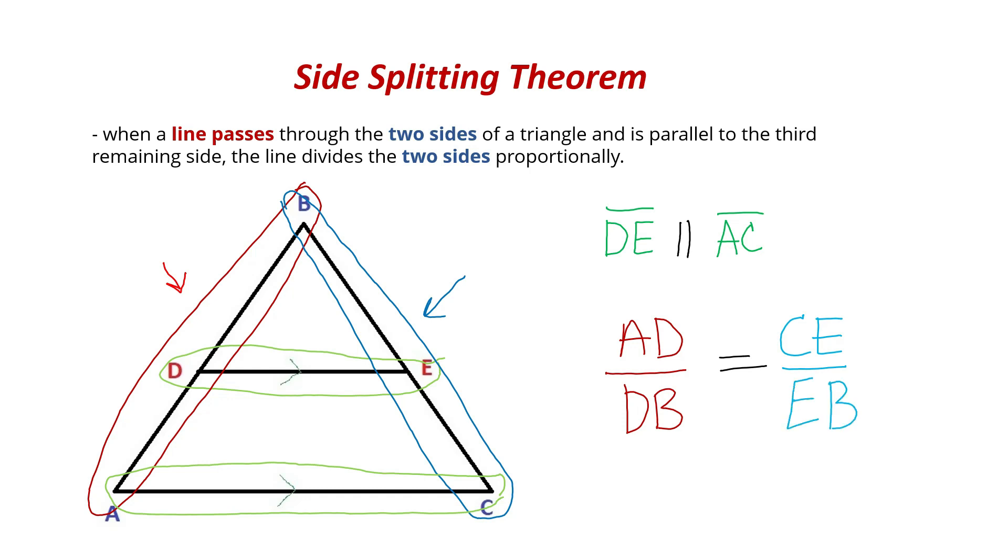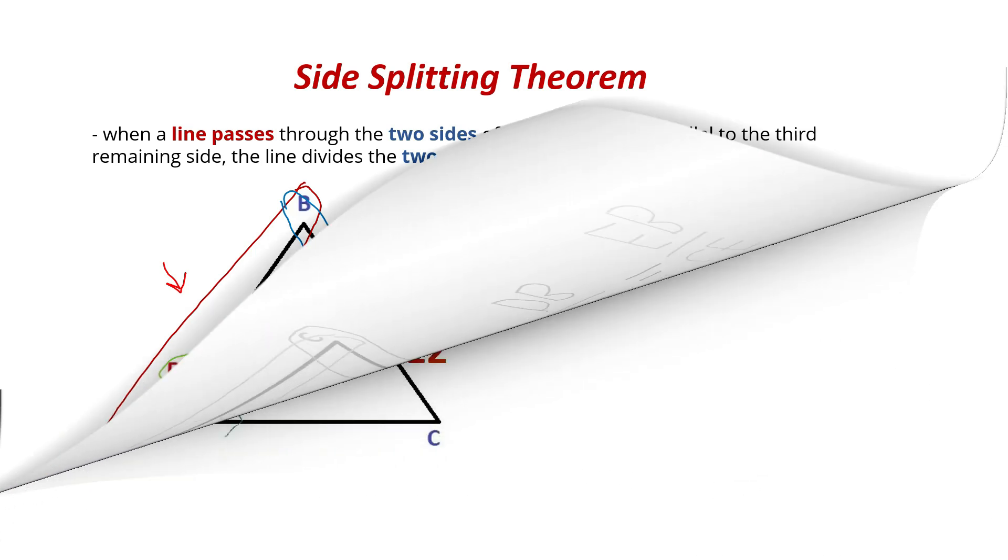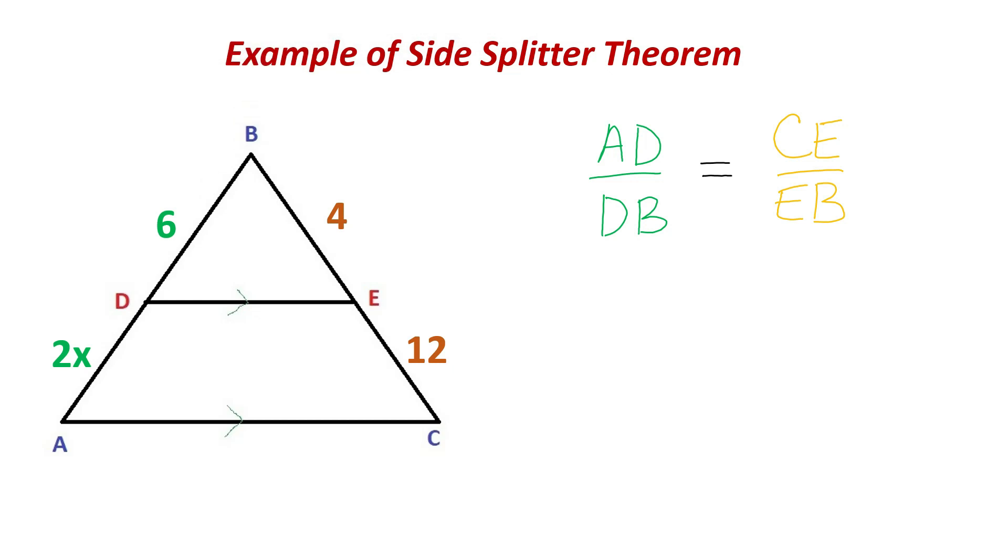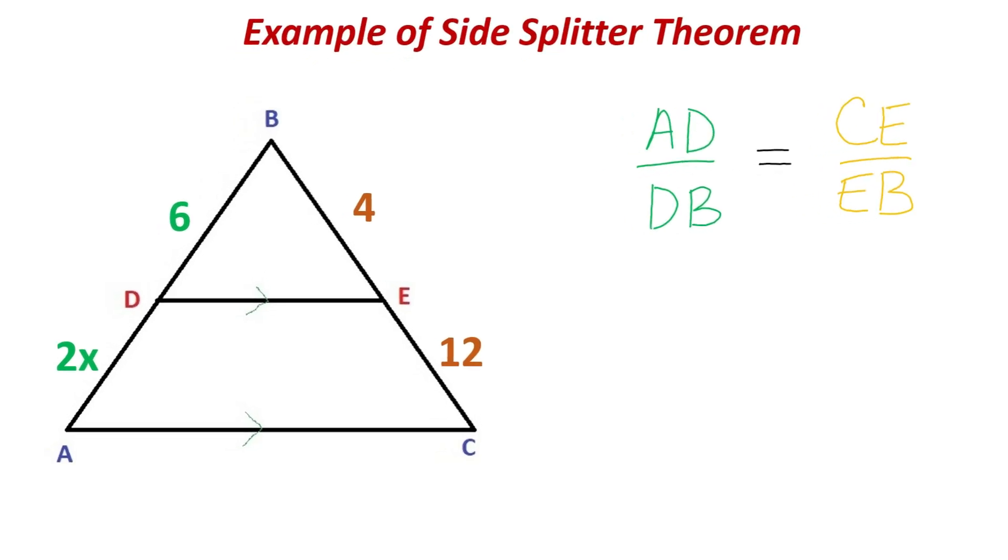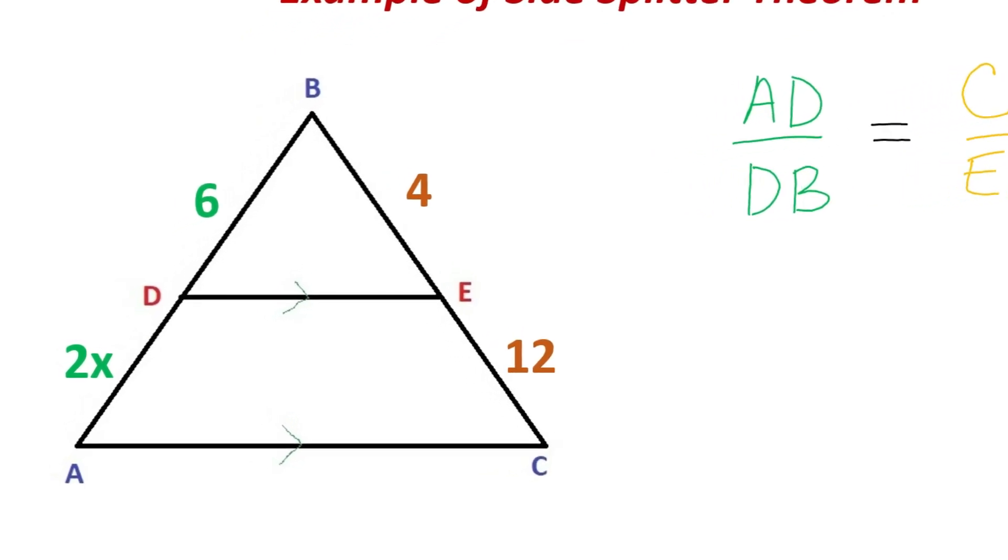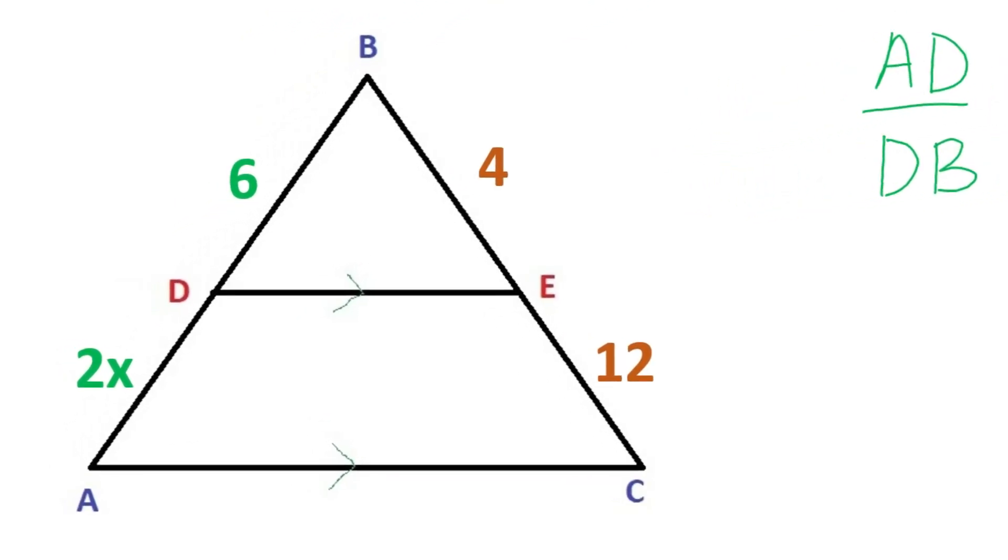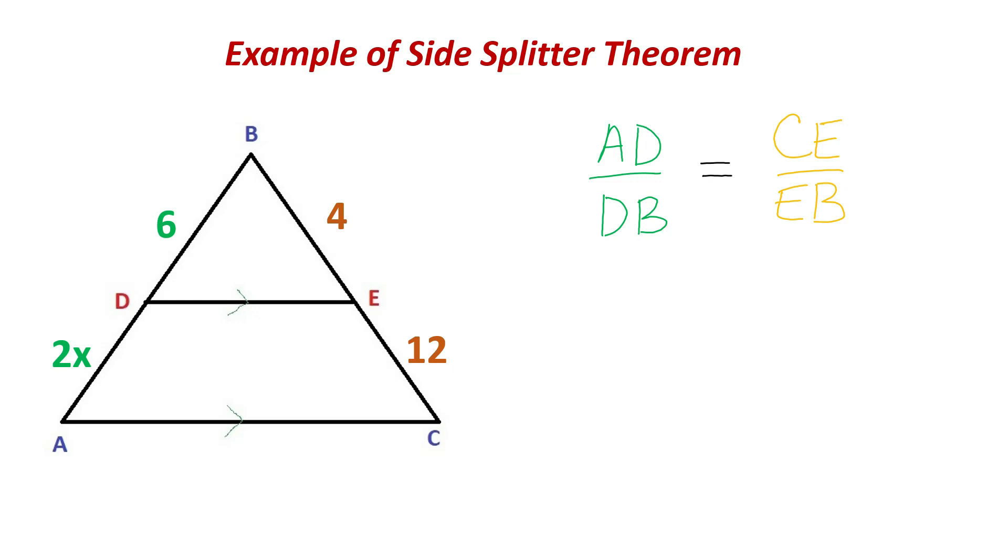So let's go ahead and try an example. So in this example, I can see that the triangle has two sides, and it is split by the line DE, and DE is parallel to AC.